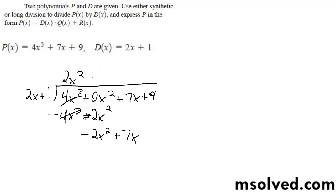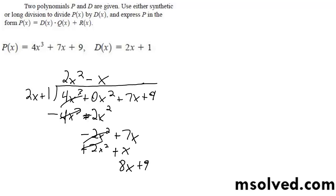2x goes into negative 2x squared, negative x times. So we get negative 2x squared minus x. Switch signs — 8x plus 9.